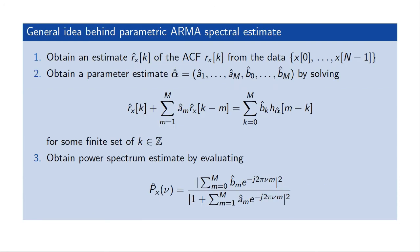The way that the ARMA spectral estimator would work is that we would first obtain an estimate of the autocorrelation from the samples that we are given. Then we would obtain an estimate of the parameters by fitting those parameters to the Yule-Walker equations using our estimate for the autocorrelation function. These Yule-Walker equations are defined for any time lag k, so we would pick a finite set of k in order to arrive at a finite set of equations, which would allow us to solve for the parameters. Then once we have the parameter estimates, we can obtain an estimate of the power spectrum by computing the squared magnitude of the frequency response of the filter for these particular parameters.